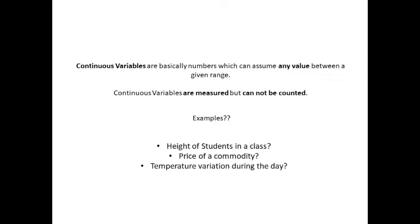And say for example, the lowest temperature is recorded as 20 degrees Celsius and highest is recorded as 30 degrees Celsius. Then between these two numbers, the temperature can assume any value, for example, 25.3 degrees Celsius or 29.7 degrees Celsius.